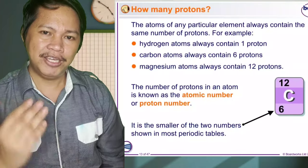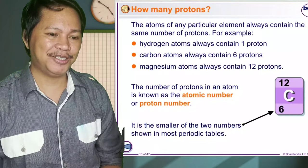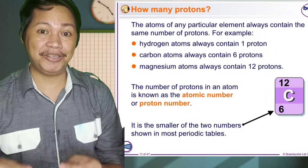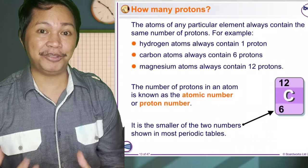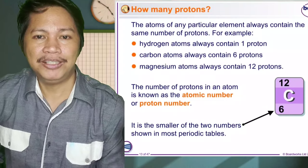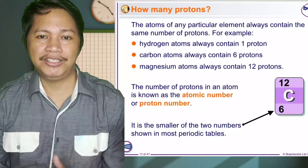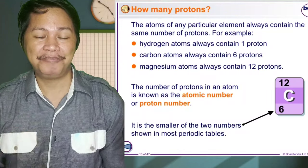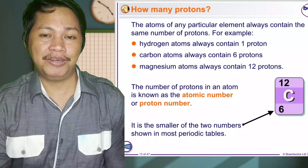I have here an element, for example, carbon. Carbon always contains atomic number 6, it has 6 protons, and atomic mass is 12. So in writing this, first you need to write the symbol, which is carbon, capital C. And if you observe class, there is a number written below the symbol, and that is the atomic number.